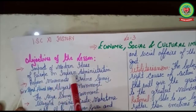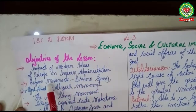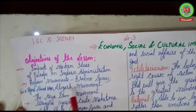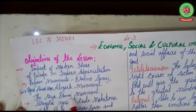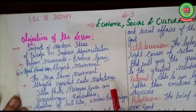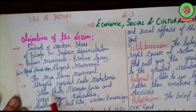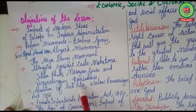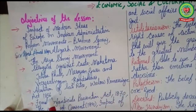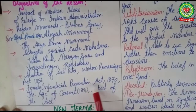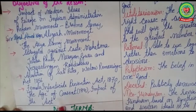The objectives are to understand the impact of modern ideas of Europe on Indian administration, reform movements — in which we will study about Brahmo Samaj, Syed Ahmad Khan and his Aligarh Movement, the Arya Samaj movement — then the struggle against the caste system, discussing the contribution of Mahatma Jyotiba Phule, Narayana Guru, and Veerasalingam Kandukuri, and the abolition of Sati.